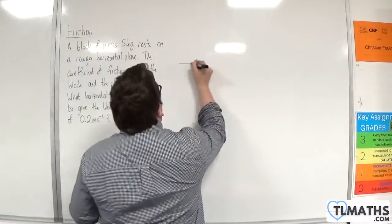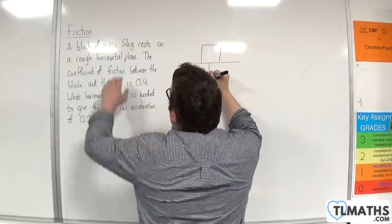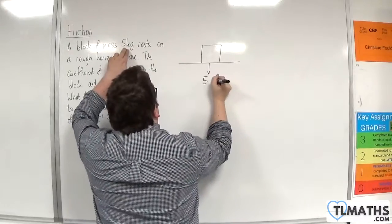So we'll draw a diagram. Here is our rough horizontal ground. Here is our block. It has a mass of 5 kilos, so a weight of 5g.